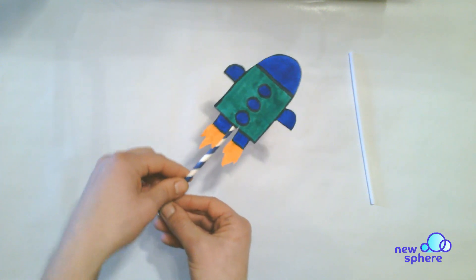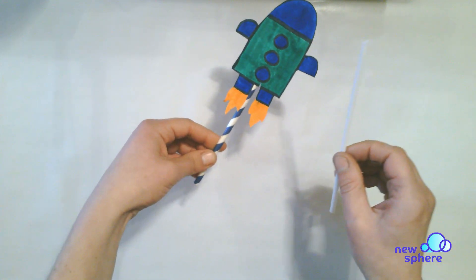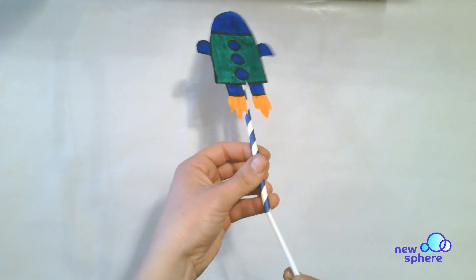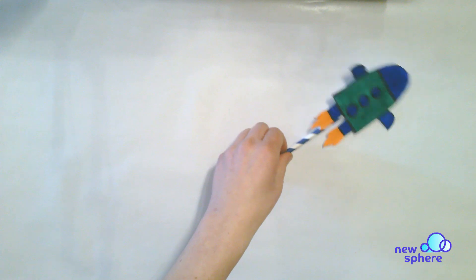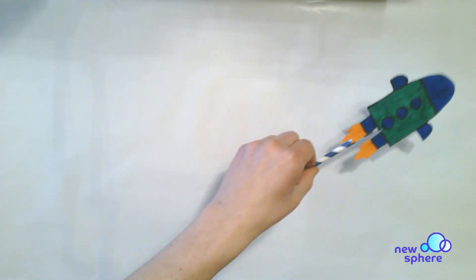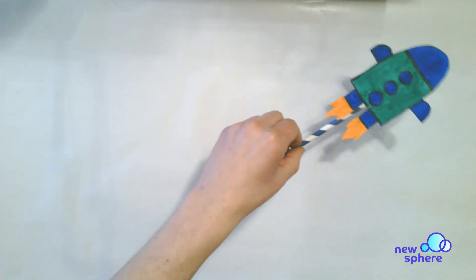Now your rocket is ready for blast off. Take the thin straw and put it inside the other straw. Put the thin straw up to your mouth and blow. Zoom! Your rocket is ready to fly through outer space.